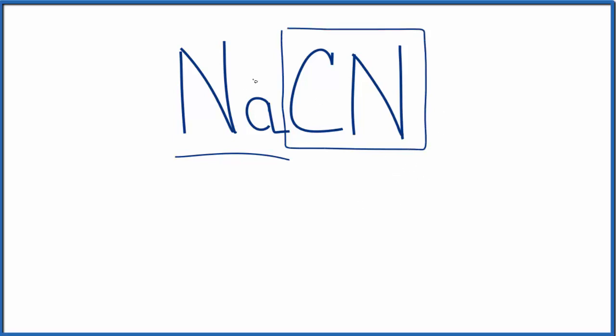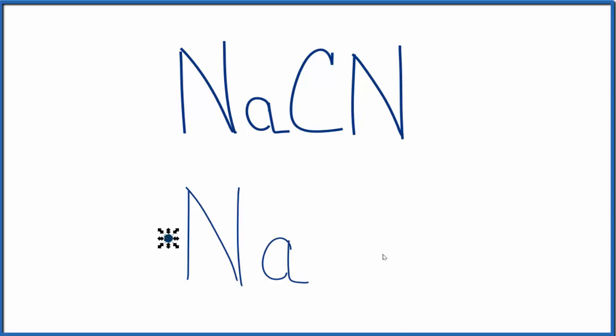We're going to treat this as the sodium ion and the cyanide ion. We have a metal and a group of nonmetals, so it's an ionic compound. Let's draw sodium as Na. Sodium has one valence electron—it's in group one on the periodic table.